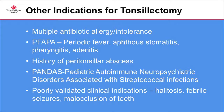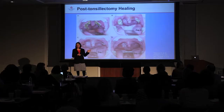There are other indications for tonsillectomy: kids with recurrent tonsillitis who haven't met the minimum criteria but have multiple antibiotic reactions or intolerances; kids with PFAPA (periodic fever, aphthous stomatitis, pharyngitis, and adenitis); history of peritonsillar abscess, especially in pre-adolescents; and PANDAS, which is more equivocal with only about a quarter of kids showing improvement. Other poorly validated indications include halitosis, febrile seizures, and malocclusion of the teeth.